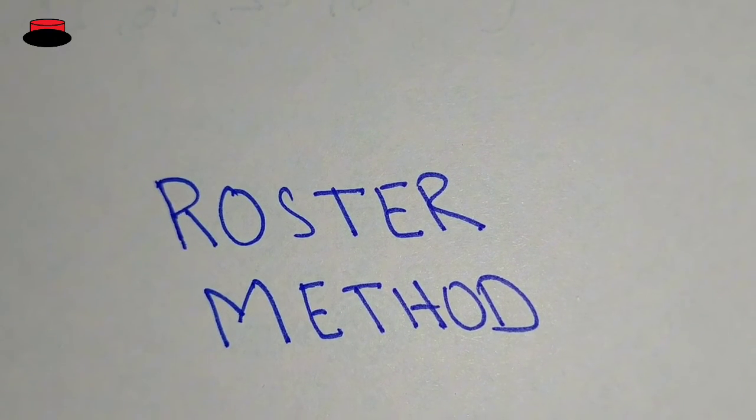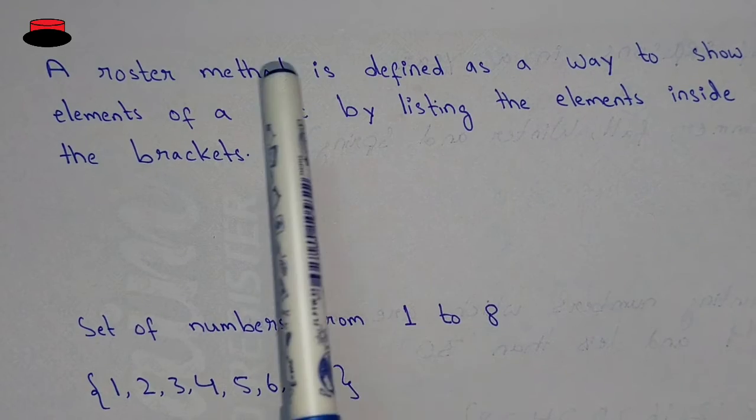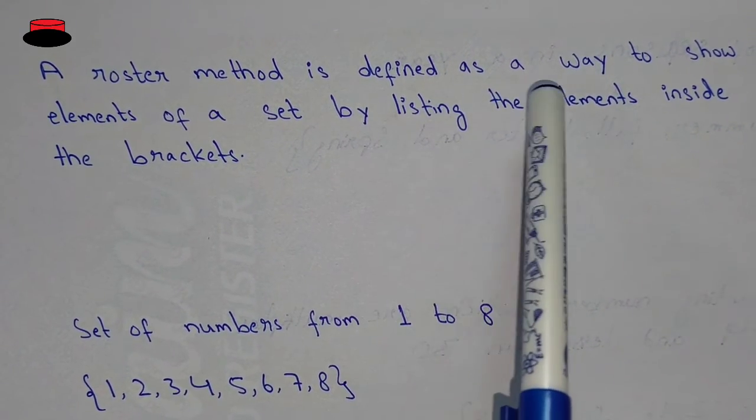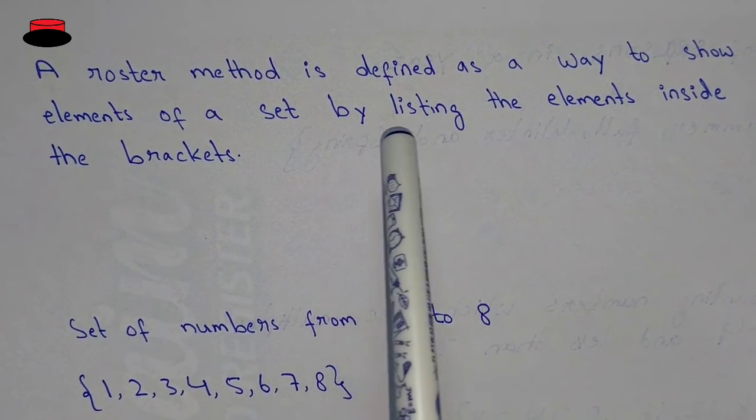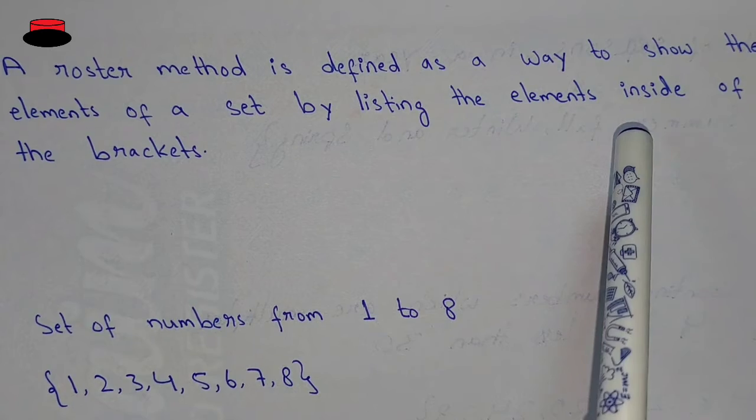So the definition of the roster method says: a roster method is defined as a way to show the elements of a set by listing the elements inside the brackets.